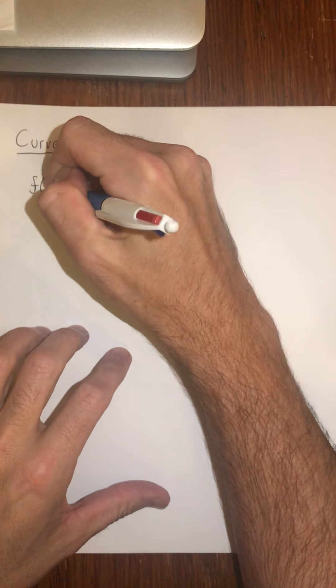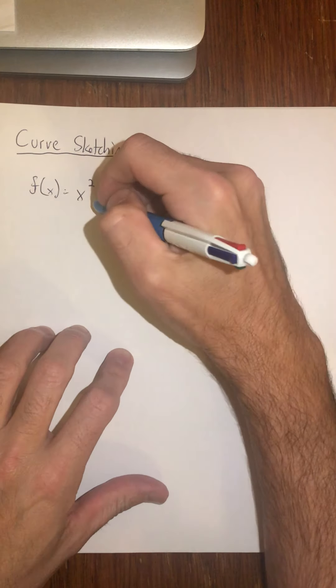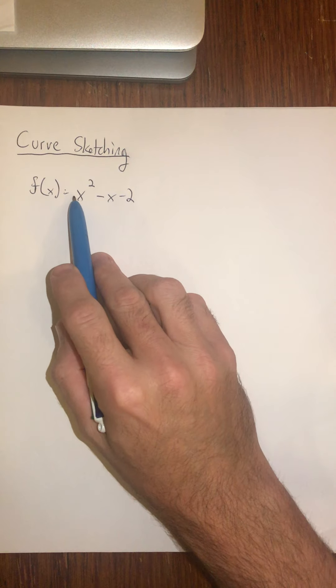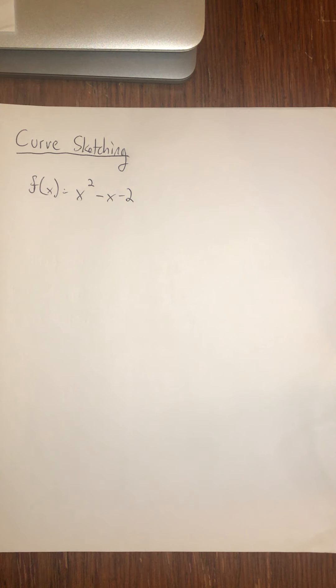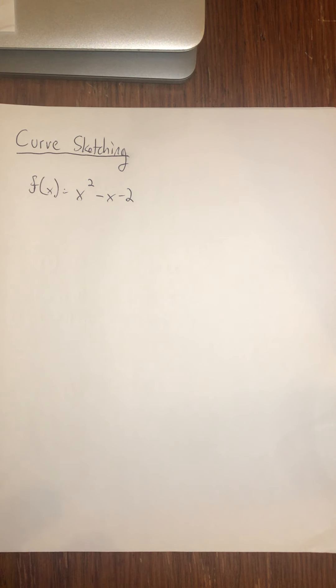Let's say we have a function f(x) = x² - x - 2, a simple quadratic. We know it's a parabola that opens upwards because of the positive leading term on x². If I wanted to sketch this, I'd want to know the important points on the curve: intercepts, turning points (also called extrema), and points of inflection. If I know all the intercepts, extrema, and points of inflection, I can sketch the curve — that's what this skill is about.